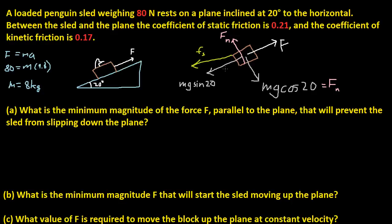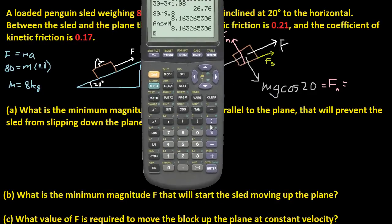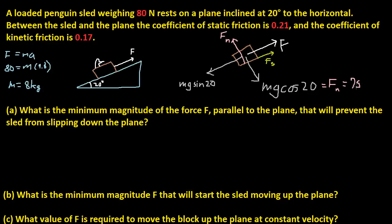Now that we have our free body diagram, let's figure out the forces. The normal force is mg cosine 20. We type it into the calculator: M times 9.8 times cosine of 20, and we get 75 newtons. I'm going to store this to N for normal force.